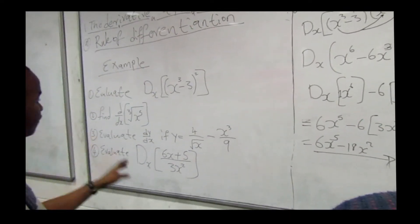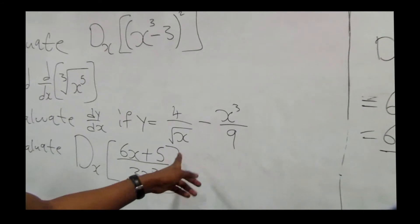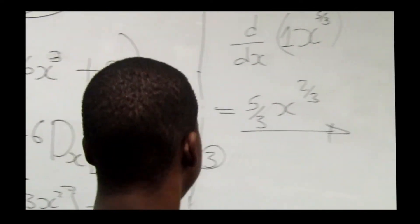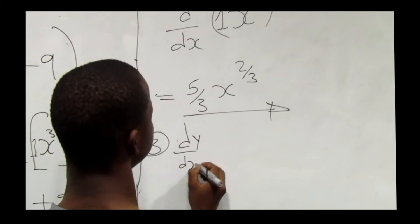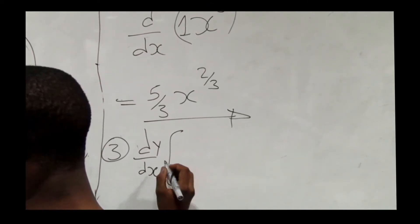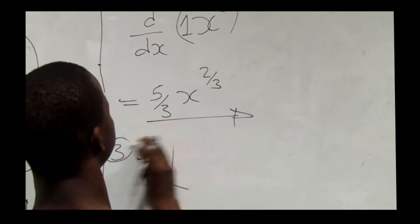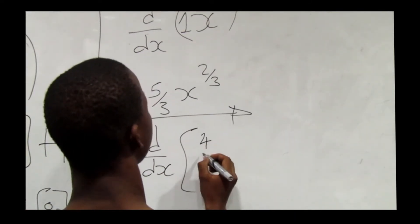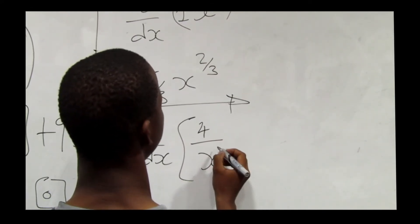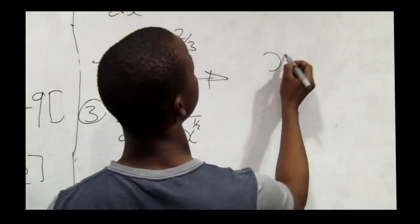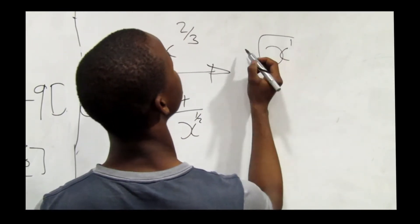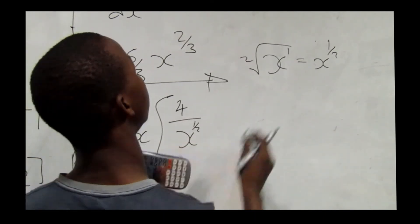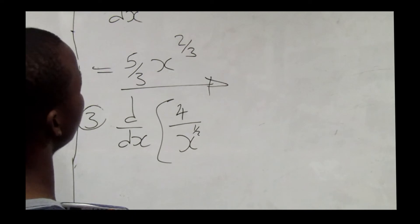Number three: evaluate dy/dx if y equals 4√x minus x³ over 9. For our dy/dx, remember that √x equals x to the power one over two, so 4√x becomes 4 times x to the power 1/2.